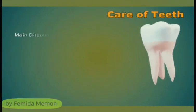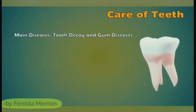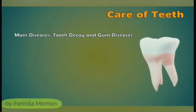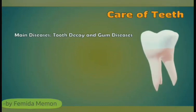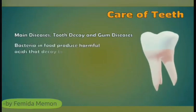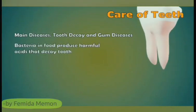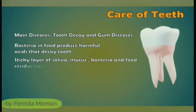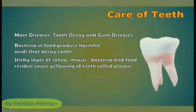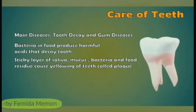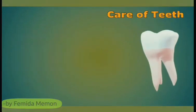Care of teeth: The main diseases of teeth are decay and gum diseases. About 90% of children suffer from tooth decay. It begins when bacteria act on sugars commonly found in food; the bacteria produce harmful acids that attack the tooth enamel and form a cavity. A sticky layer of saliva, mucus, bacteria and food residue causes yellowing of teeth called plaque, which can cause gum diseases.